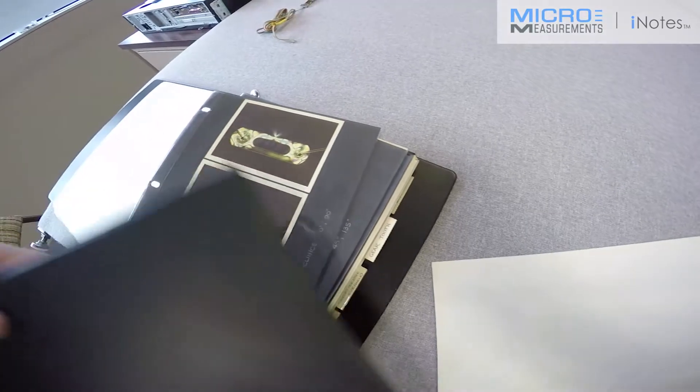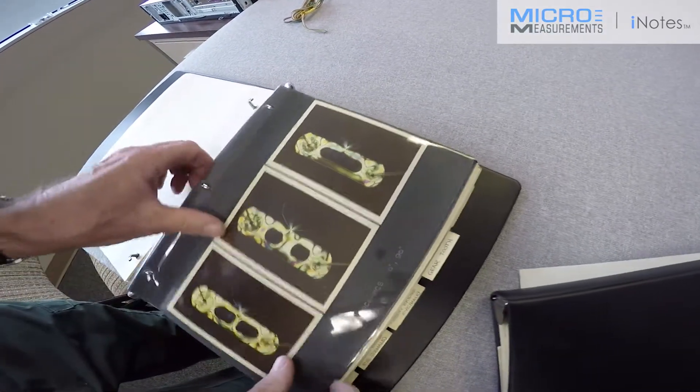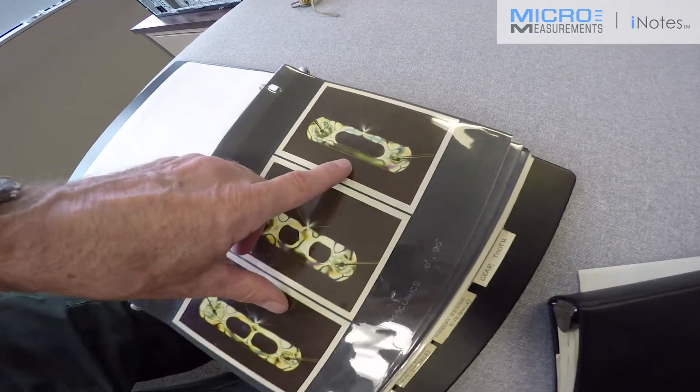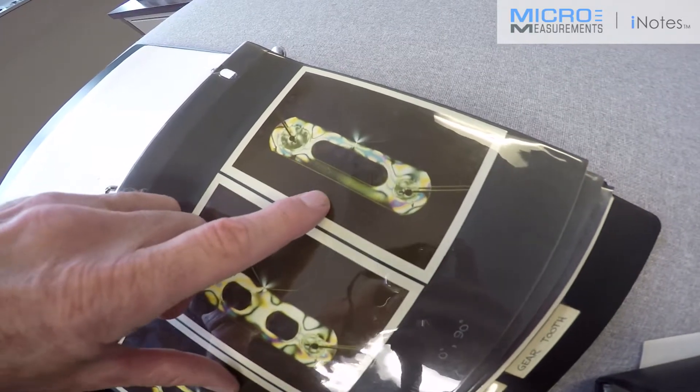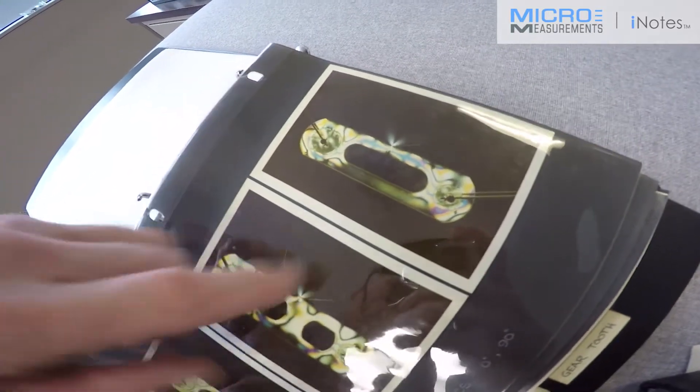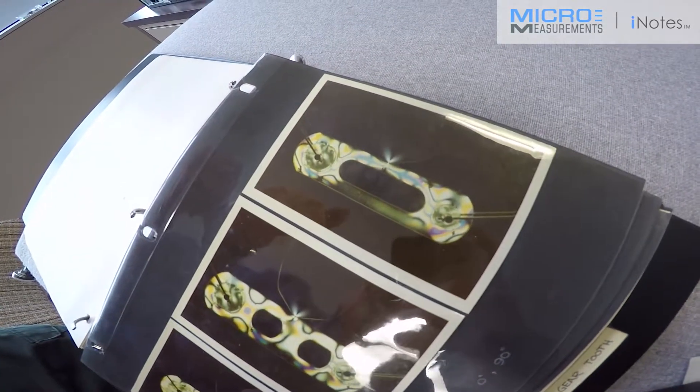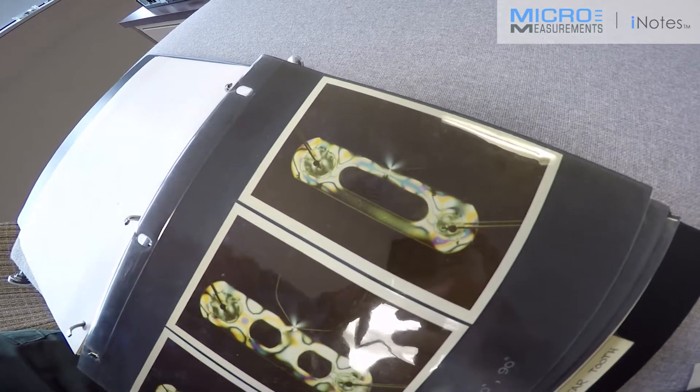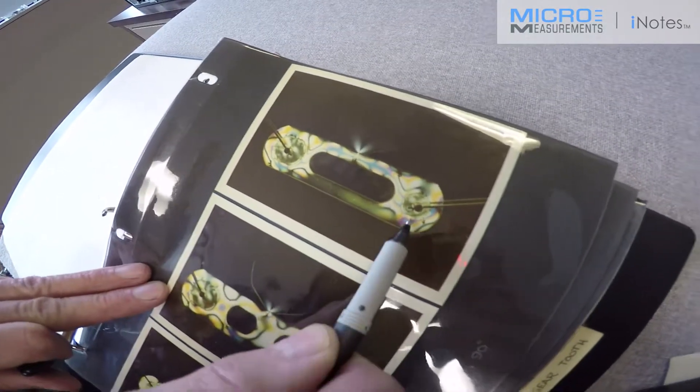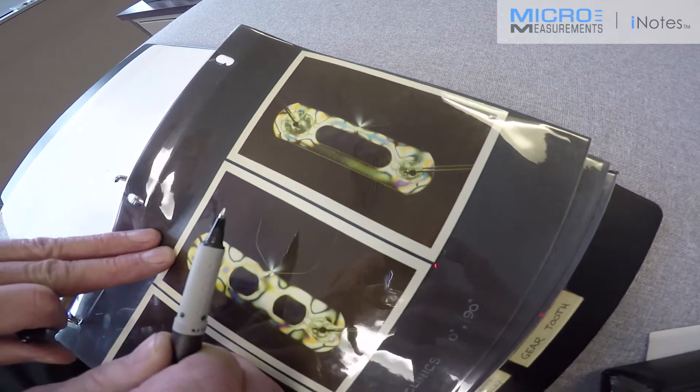We made a photoelastic model of the original chain design, which was this, the side link. The first question was, where is that link being loaded to cause stress concentrations to occur in the corners in these areas where the links were breaking?